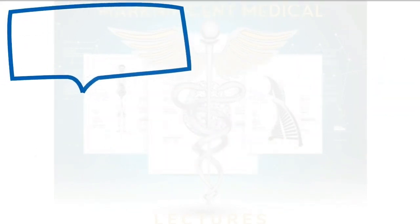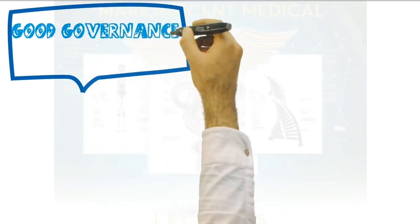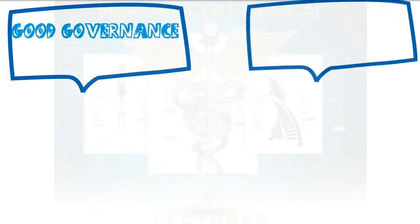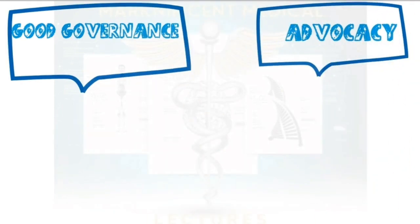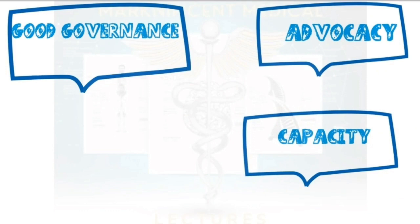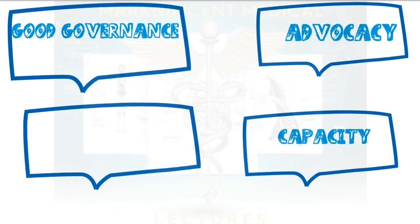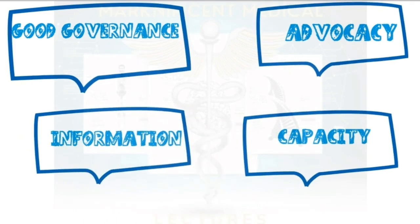To enable these core areas to function, there needs to be good governance; advocacy to influence and obtain support and commitment for actions that support a health goal; capacity — having an adequate, well-trained, and supported public health workforce; and having accurate, timely information to support health actions, such as relevant research, surveillance, monitoring, and evaluation.